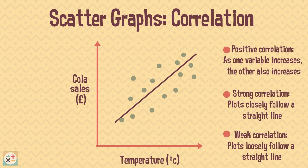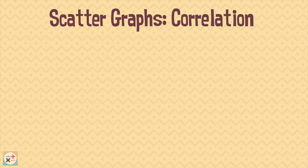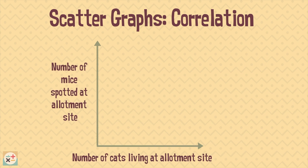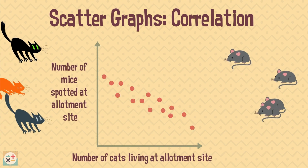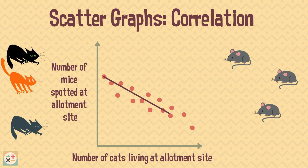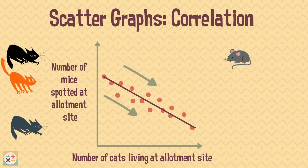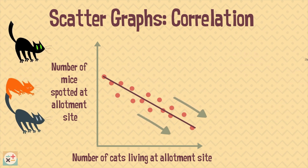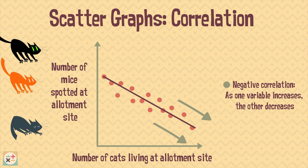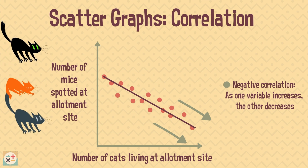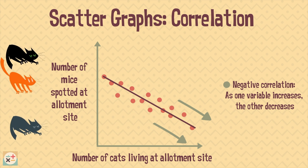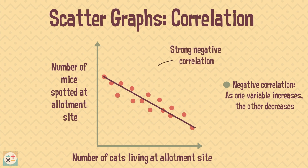Now let's have a look at another example. This scatter graph shows that as the number of cats living at an allotment site increases, the number of mice decrease. This shows a negative correlation — in particular, a strong correlation. As one variable increases, the other decreases.